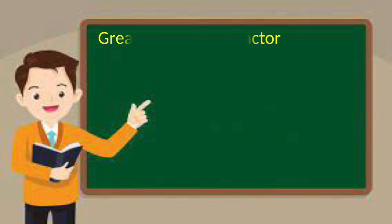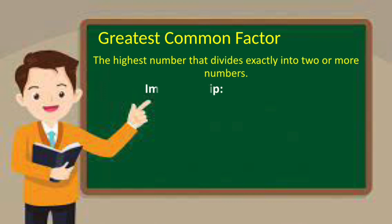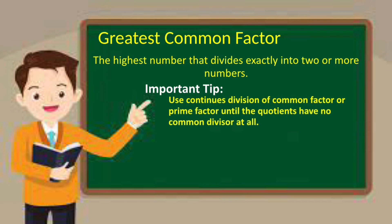What is the greatest common factor? It is the highest number that divides exactly two or more numbers. First tip: use continuous division of common factor or prime factor until the quotients have no common divisor at all.